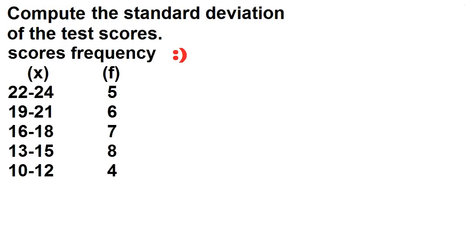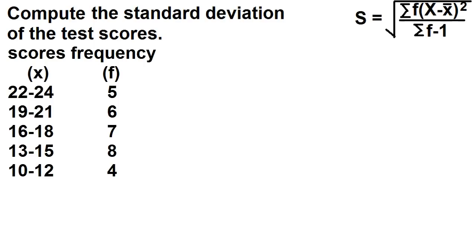Compute the standard deviation of the test scores. To compute the standard deviation, use this formula. The standard deviation is just the square root of the sum of the product of the frequency and the square of the deviation from the mean, divided by the total frequency minus 1.